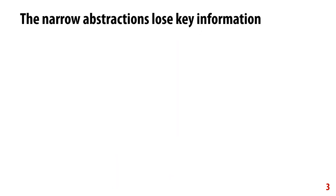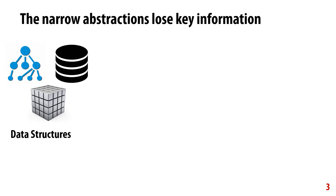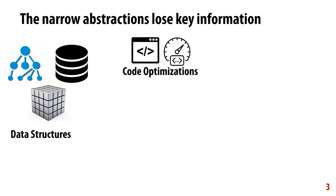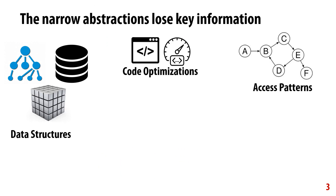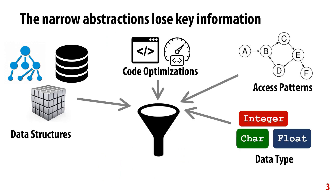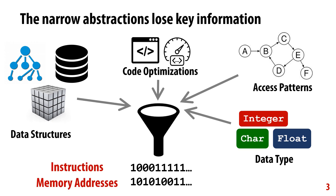As a result, even simple higher-level information, like the notion of data structures, code optimizations, etc., are all lost and get translated into a sequence of bits that form the ISA or memory addresses. In other words, these abstractions can be very narrow.